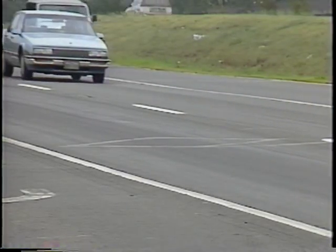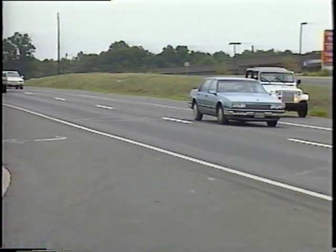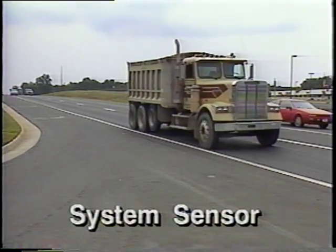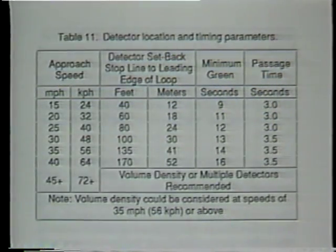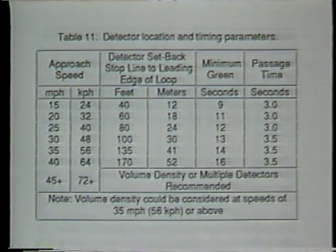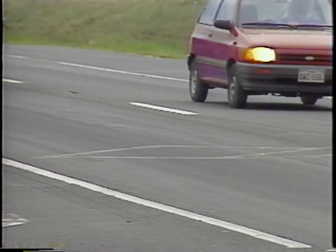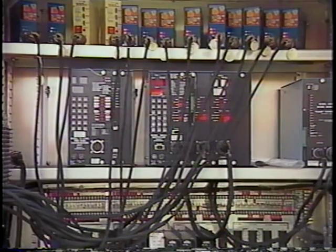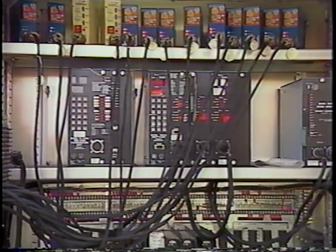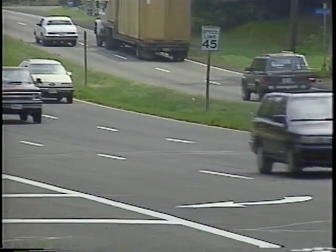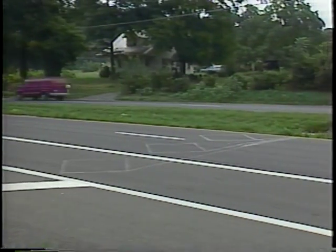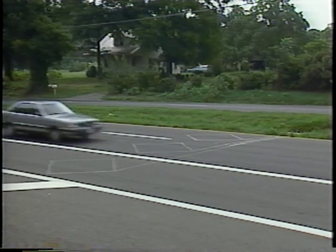Traffic detectors can also serve as system sensors. Traffic flow information provided by detectors is used by the system to compute signal timing, as well as to select and develop timing plans. These system sensors sample traffic at strategic locations, with the type of sensor determined by the type of information needed. To control arterial street systems, detectors need information on volume and occupancy, sampled at free-flowing mid-block locations.